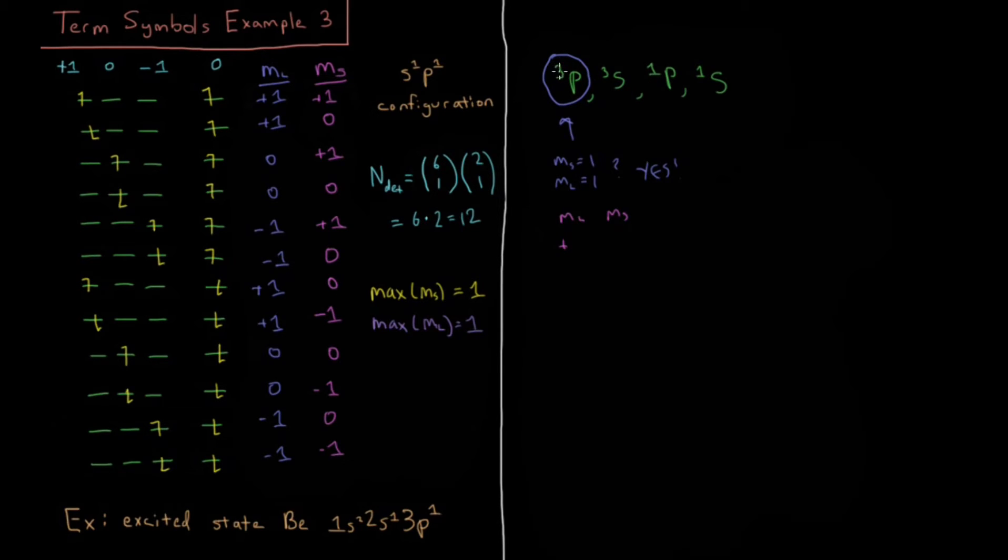We need all of these products for plus 1, 0, minus 1, plus 1, 0, minus 1. We're expecting there to be 9 determinants, because that is the value of 2s plus 1 times 2l plus 1 is 3 times 3 equals 9. That's going to be all of those cross pairs there.